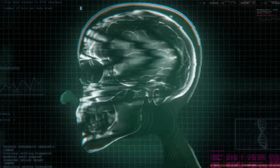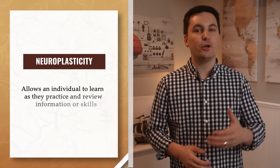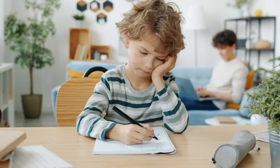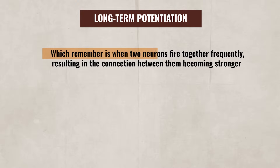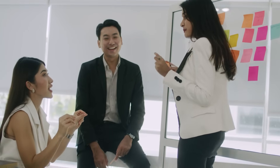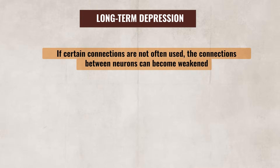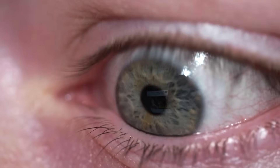Neurologically, we can also see a couple of factors impacting learning. The brain's ability to change and reorganize itself by forming new neural connections — known as neuroplasticity — allows an individual to learn as they practice and review information or skills. At the same time, skills and information that are not practiced start to become harder to remember. This often occurs due to synaptic changes such as long-term potentiation, which is when two neurons fire together frequently, resulting in the connection between them becoming stronger and making it easier for them to communicate. However, if certain connections are not used often, the connections between those neurons can become weakened — a process known as long-term depression. Both of these changes allow the brain to remain flexible and focus on storing information that is relevant to the individual.